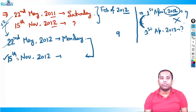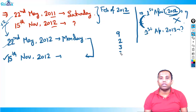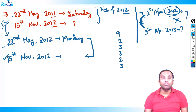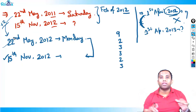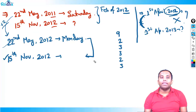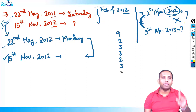From May I have to reach 15th November. Cross June — 30 days, two odd days. Cross July — 31 days, three odd days. Cross August — 31 days, three odd days. September — 30 days, two odd days. October — 31 days, three odd days. In November till 15th — 15 divided by 7, remainder is 1 — one odd day.